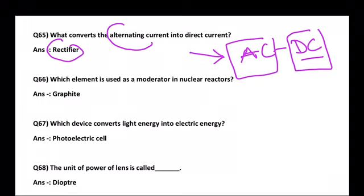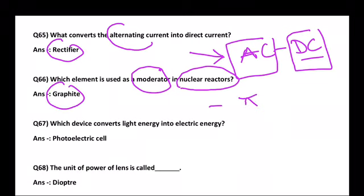Next question: Which element is used as a moderator in nuclear reactors? The answer is graphite. Graphite is used as a moderator in nuclear reactors. Water is used as a cooling agent.